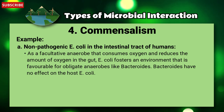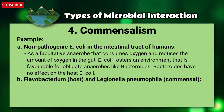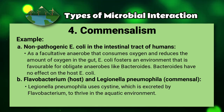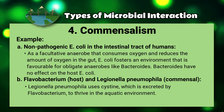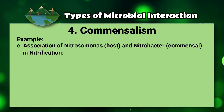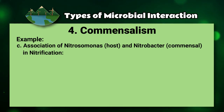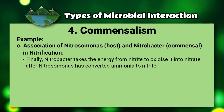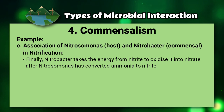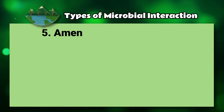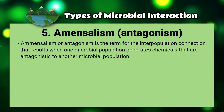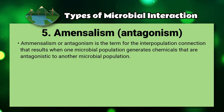Bacteroides have no harmful effect on the host E. coli. A second example is Flavobacterium (host) and Navicula (commensal) — Navicula uses cytokinin extracted by Flavobacterium to thrive in the aquatic environment. The third association is Nitrosomonas (host) and Nitrobacter (commensal) in nitrification: Nitrobacter takes energy from nitrite to oxidize it into nitrate after Nitrosomonas has converted ammonia to nitrite.